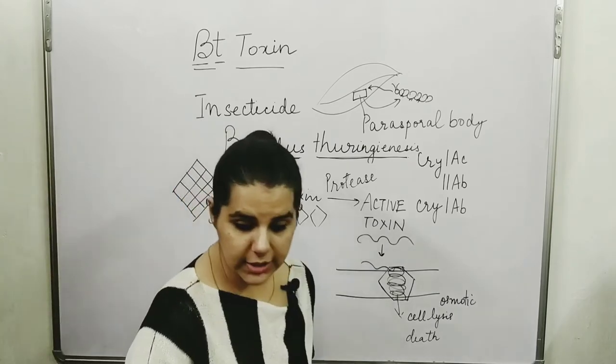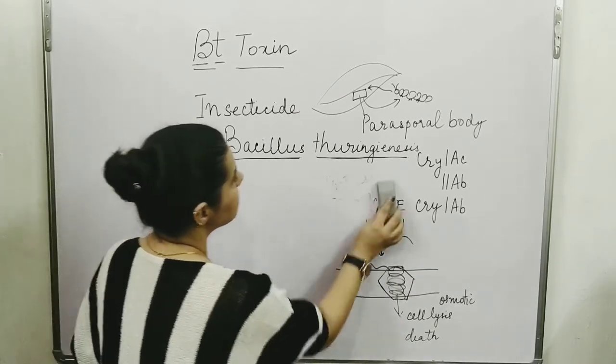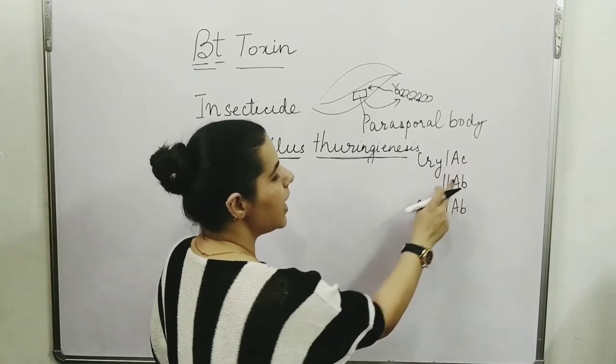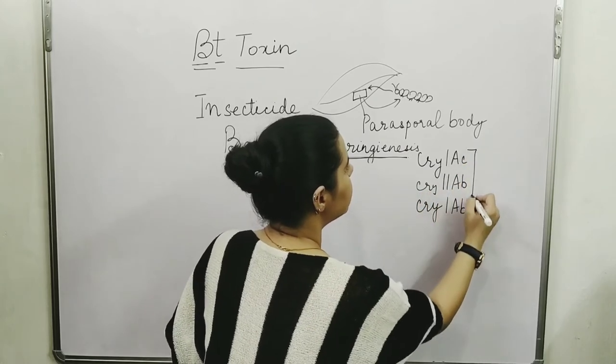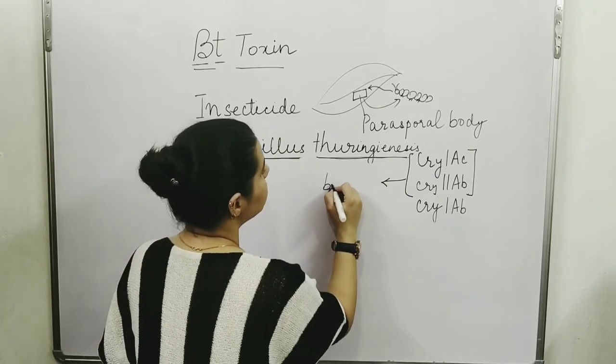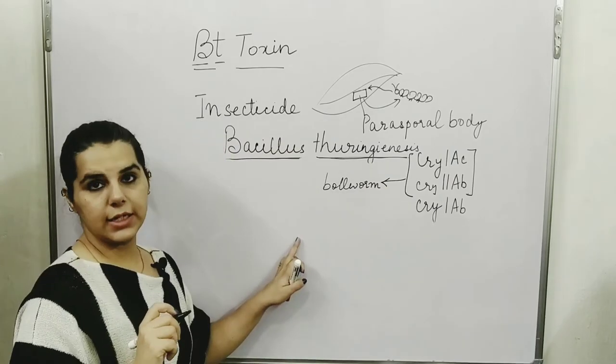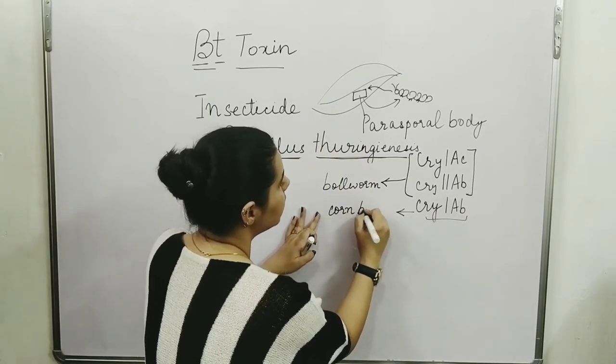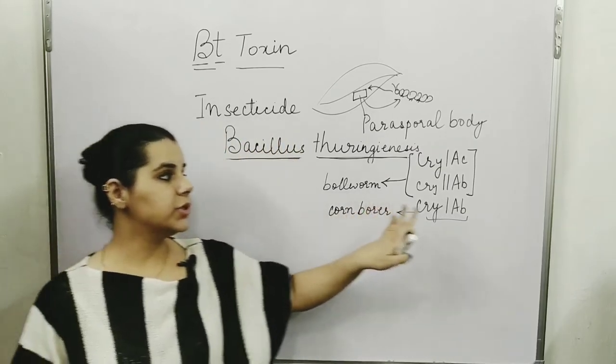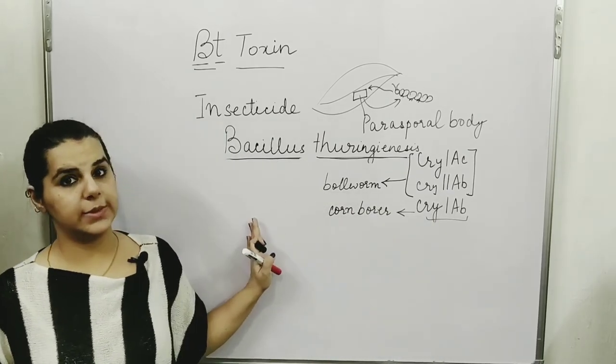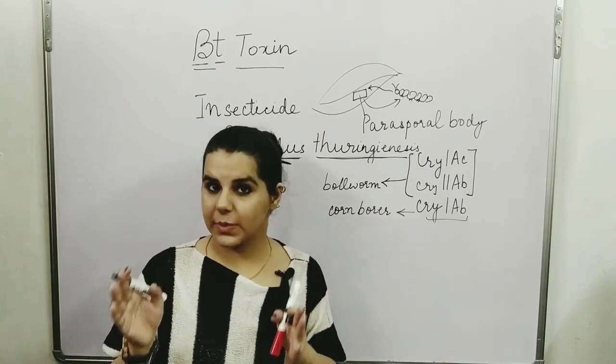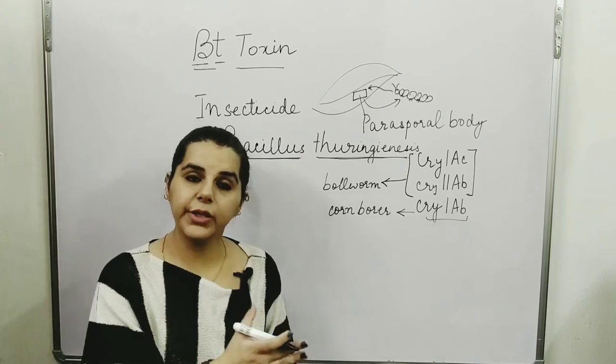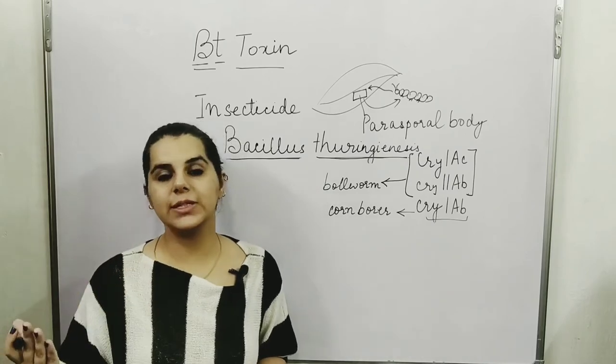The genes responsible for production of this BT toxin are like CRY1AC and CRY2AB. These two genes are effective against cotton bollworm, effective against the larvae stage of cotton bollworm. And CRY1AB is responsible against corn borer, against the larvae stage of corn borer. So here are different genes, different cry genes, different cry proteins, different types of BT toxin which are called species specific.